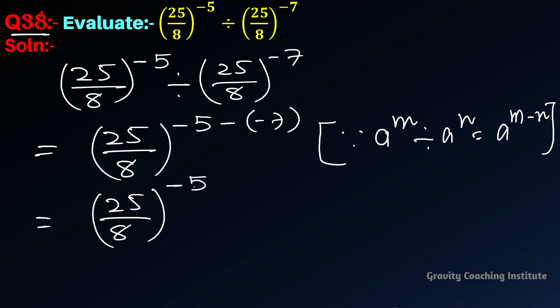So this will be -5, and minus times minus gives a plus sign, resulting in -5 + 7, which equals 2. Therefore (25/8)^2 equals 25 squared upon 8 squared.